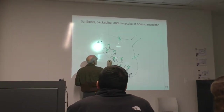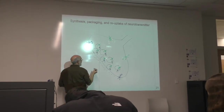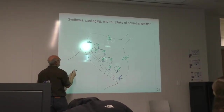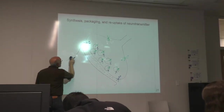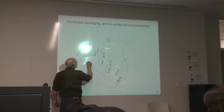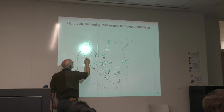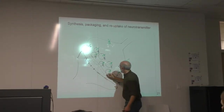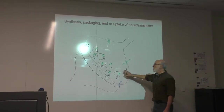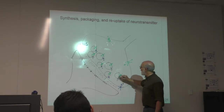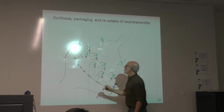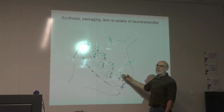Vesicles fused and dumped their neurotransmitter into the synaptic cleft. On the other side of the synaptic cleft, there is a dendrite of another cell. Vesicles have fused and released neurotransmitter, and the neurotransmitter has to be taken back up into the presynaptic terminal and then repackaged into vesicles. The synapse has some vesicles that are docked and some that are not yet docked.